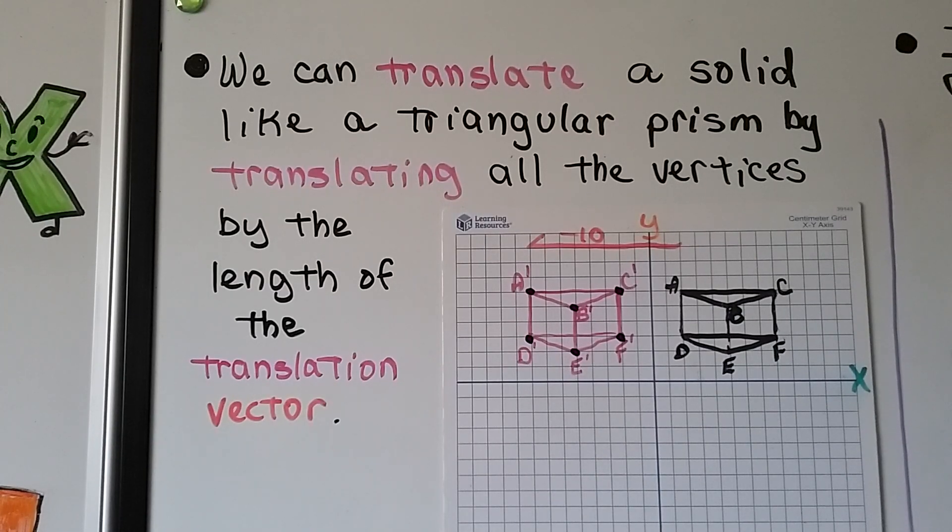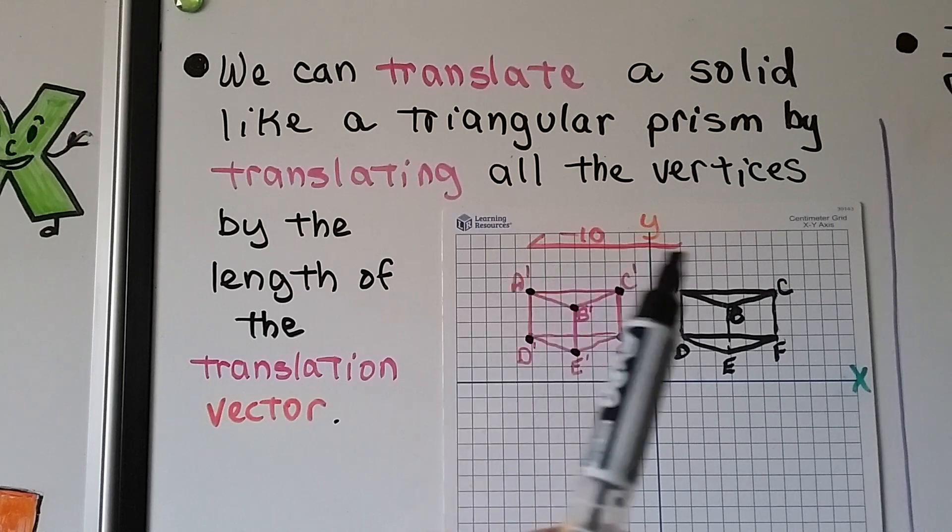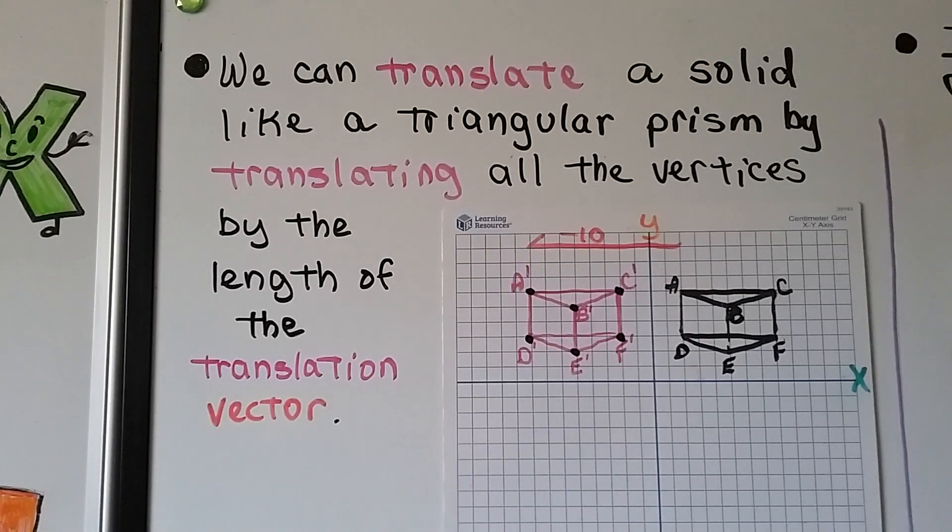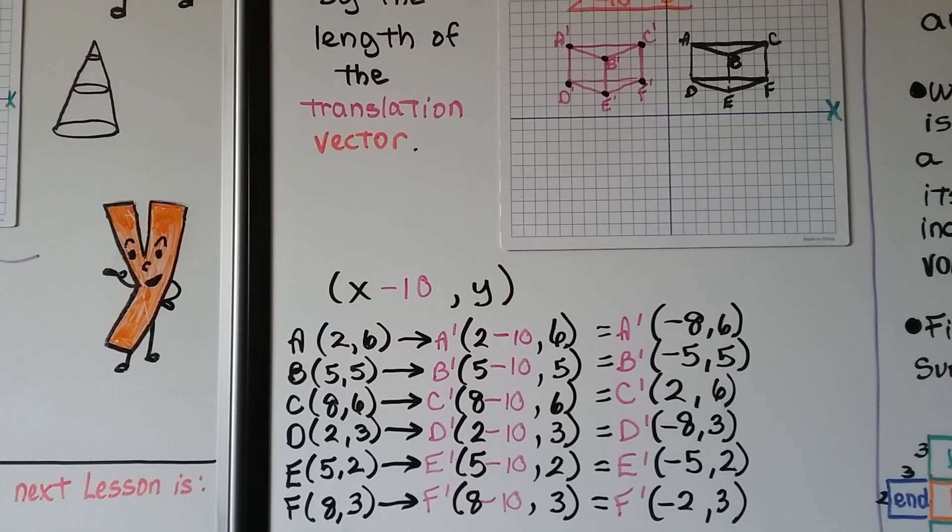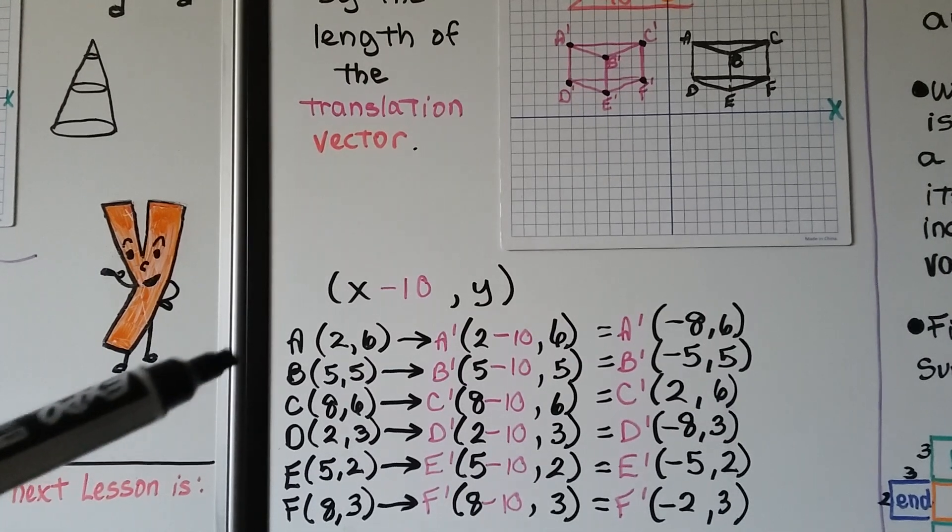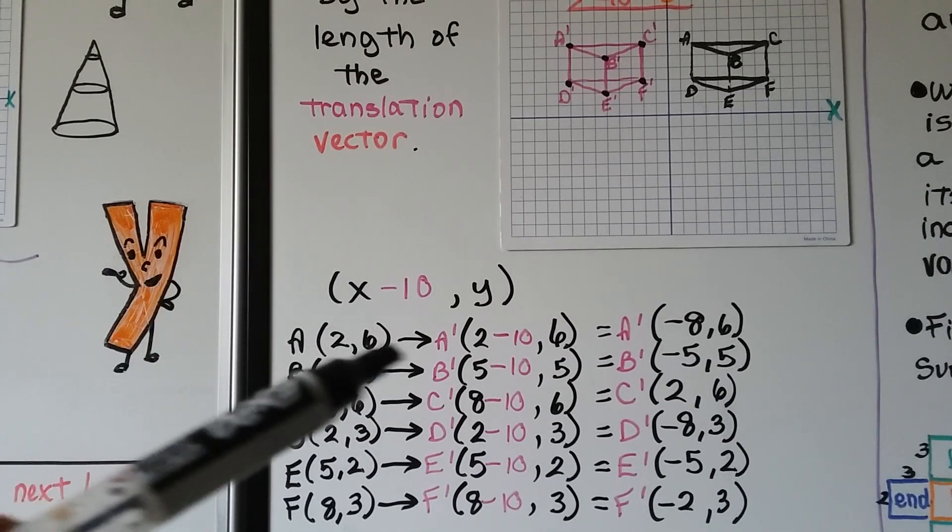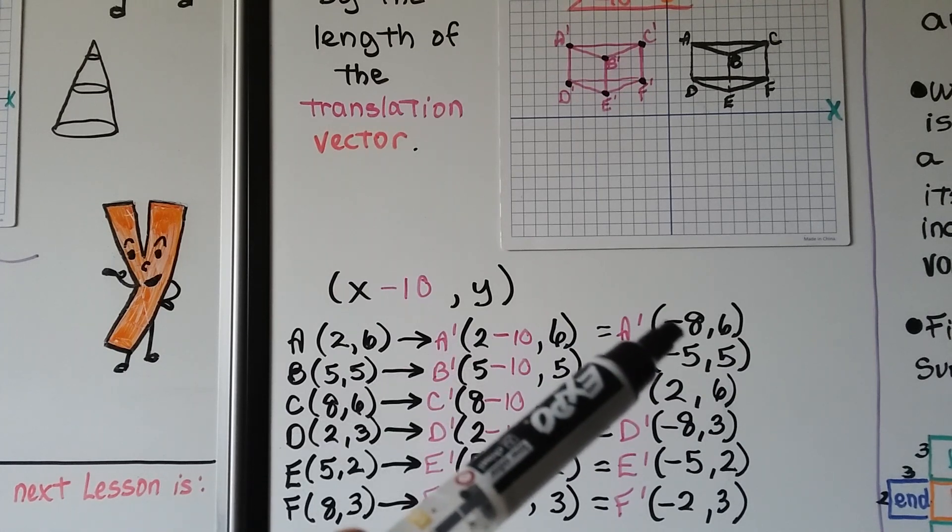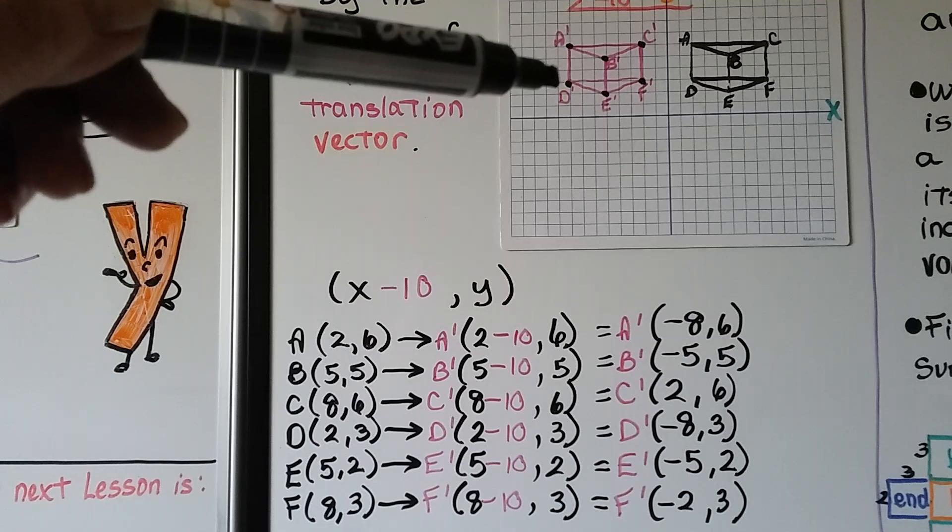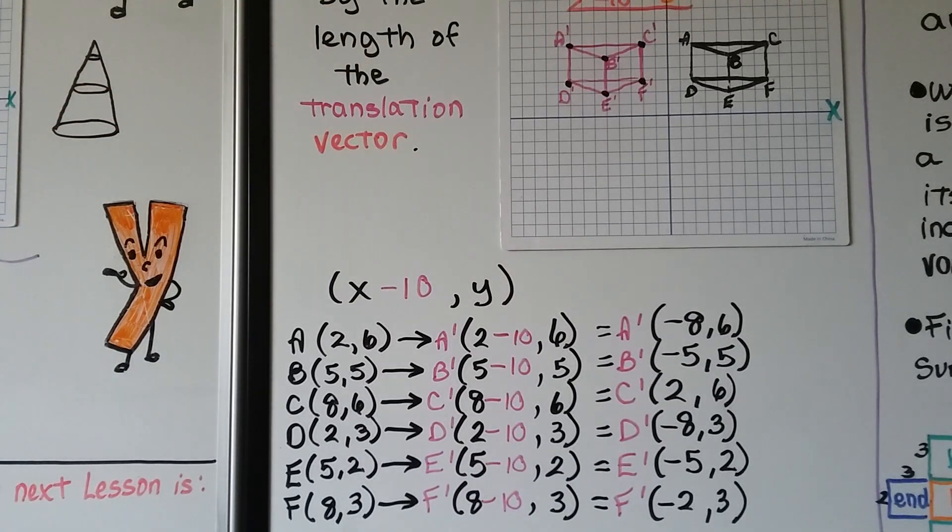We can translate a solid like a triangular prism by translating all the vertices by the length of the translation vector. So here's our vector. We're going to go negative 10 for x. It's parallel to the x-axis. That means whatever the x value is, we're going to subtract 10 and we're going to keep y as it is. So if a is at 2 for x, 6 for y, we're going to do 2 minus 10 to get a negative 8 for x, and then 6 will stay the same. We do it for each of the vertices and it'll translate to this triangular prism with the x values negative 10 from the pre-image.